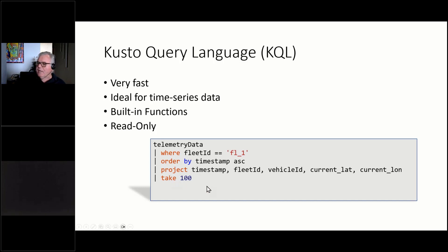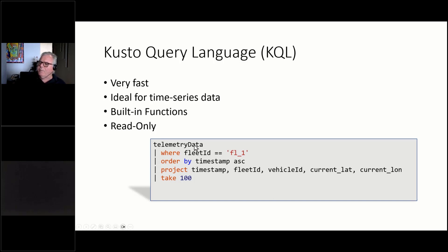Here's an example of KQL. Those familiar with SQL should be able to read this. There's the table name, a filter, an order by, and project — which specifies the column names you want to output. Take is like a top-N query. KQL also has elements of Bash scripting: the pipe character means the output of what comes before the pipe becomes the input of what comes after. You can chain them together: take an entire table, filter it, then order by, then project columns, then take 100 of them.